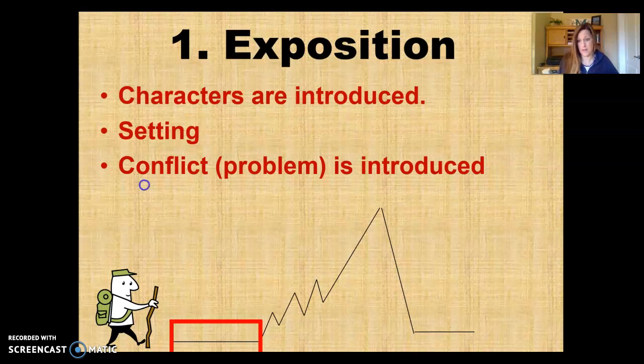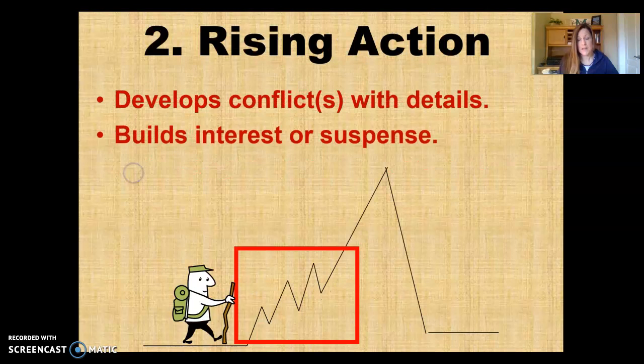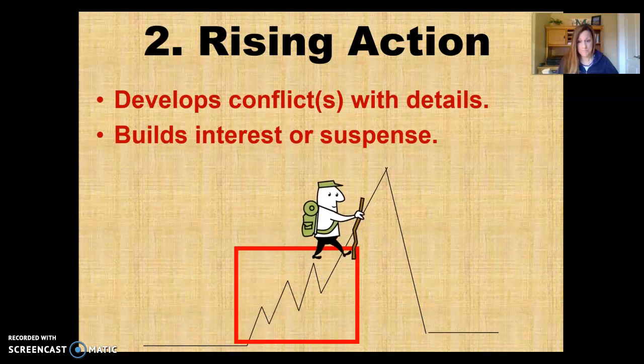Then second is the rising action, and you can see that this is the longest part of the plot diagram here. This is where your author is going to be trying to give you details about this conflict and really develop that conflict and show how much of a difficulty it is. It's building interest or suspense—this is where our authors are trying to keep the reader's interest and they're giving you lots of details about this problem. Again, you are writing all the red font words.